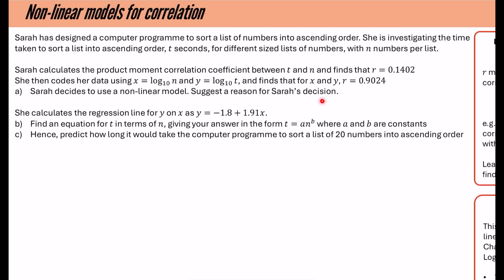So she decides to use a non-linear model, suggests a reason for Sarah's decision. That is because the coded data has much stronger correlation. The coded data has much stronger correlation. So a non-linear model is more suitable because it means that the data when it's coded lies pretty close to a straight line. And if you're going to uncode the data, it would correspond back to a curve. And that's what we're going to do now for the rest of the question.